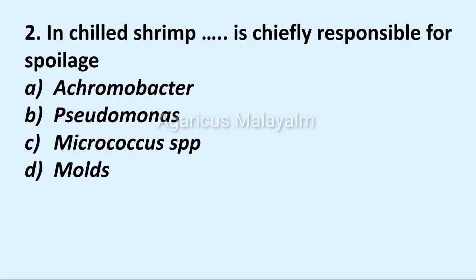Second question: in chilled shrimp, dash is chiefly responsible for spoilage. Option A: Archimobacter. Option B: Pseudomonas. Option C: Micrococcus species. Option D: molds. Correct answer: Option A, Archimobacter.